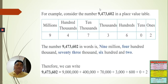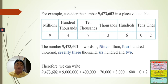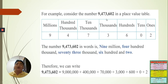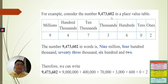For every number, there is a place value that corresponds to every digit. One number can have one digit, two digits, three digits, four digits, and so on. This example is one number — how many digits does it have? We count: one, two, three, four, five, six, seven. So there are seven digits combined together to form this number.